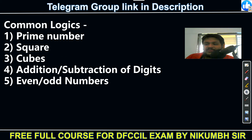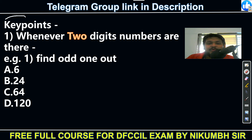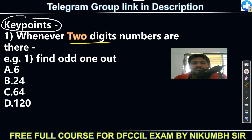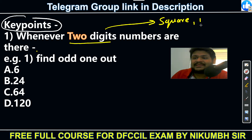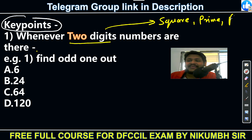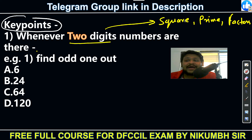Now the key points for number-based questions. Whenever a two-digit number is given, follow this priority sequence. First, check whether numbers are squares or not. Second, check whether they are prime numbers. Third, check common factors. This is basically the priority sequence — Square, Prime, Factor — remember SPF.